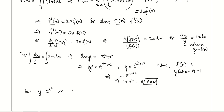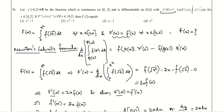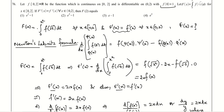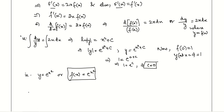So f(x) = e^(x²) is found. Now we need capital F(2). We substitute the value of f into F(x): F(x) = integral from 0 to x² of f(√t) dt. Since f(x) = e^(x²), we need to compute f(√t).